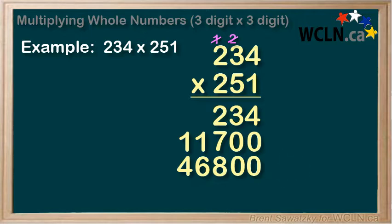So as a final step, we'll add the three parts to get our final answer. 4 plus 0 plus 0 equals 4. 3 plus 0 plus 0 equals 3. 2 plus 7 plus 8 equals 17. So we'll mark the 7 and carry the 1.